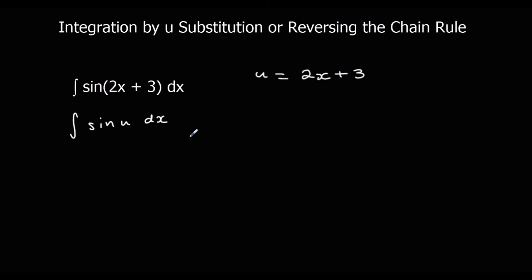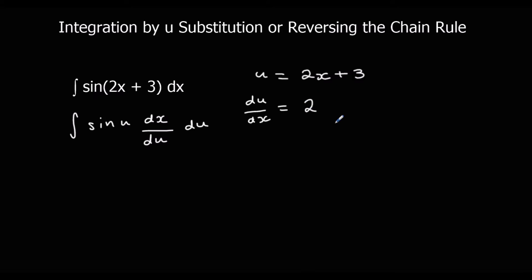We can't integrate u with respect to x, so we change it to dx/du times du. Think of it as dividing by du and multiplying by du. So we integrate sin u times dx/du with respect to u. du/dx is 2 when differentiated, and dx/du is the reciprocal of 2, which is one half.